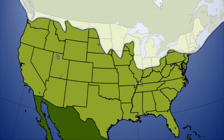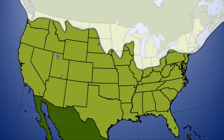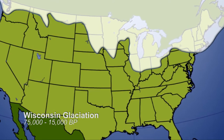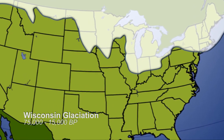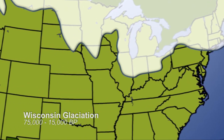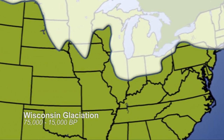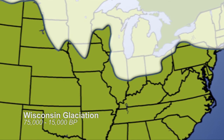The last glaciers that came through the area came down in a lobe that came through Wisconsin and Michigan, and this glacier episode is called the Wisconsin Glaciation. It covers basically the northeast quarter of the state.